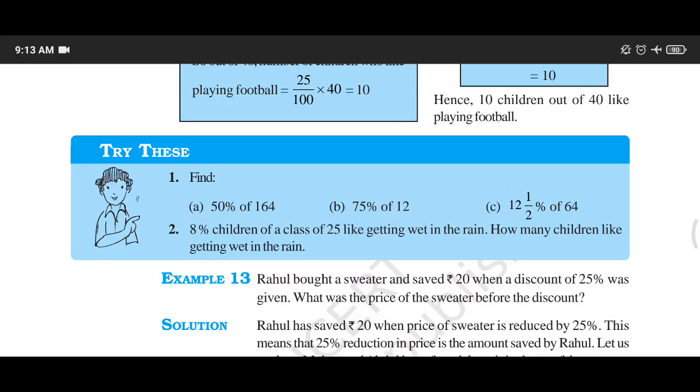Now we are solving Try These page number 164, chapter 8 on comparing quantities. Here you can see we are required to find out: 50% of 164, then 75% of 12, and 12 whole 1 upon 2 percent of 64.